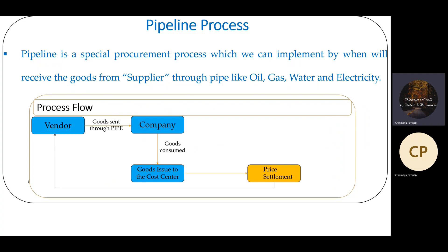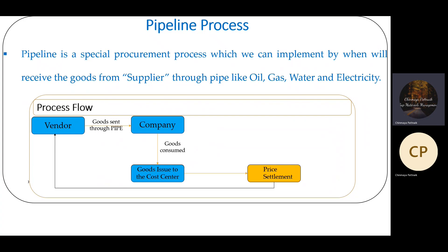The vendor will send the goods through pipe. After that, the company will consume those quantities. How much quantity the company is consuming — that much quantity the company will make payment to the vendor. This is called pipeline process.